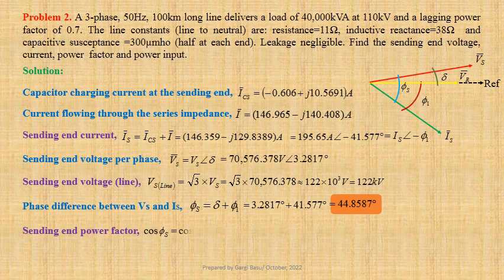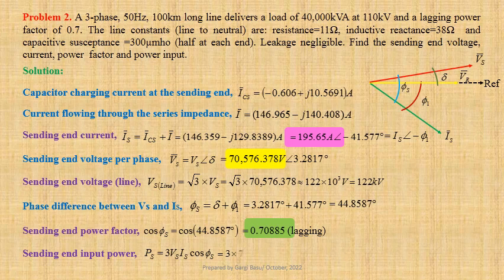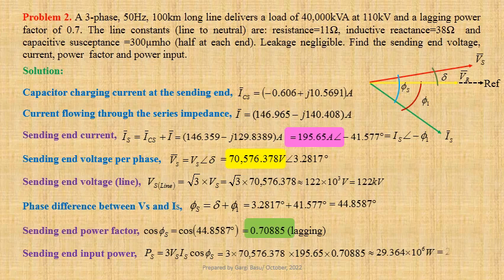Let us now calculate sending end power factor. cos φS equals cos 44.8587°, that is equal to 0.70885 lagging. Now we shall calculate sending end input power. PS equals 3 times VS times IS times cos φS. Using values: 3 × 70,576.378 × 195.65 × 0.70885, which is approximately equal to 29.364 × 10⁶ watts or 29.364 megawatt.